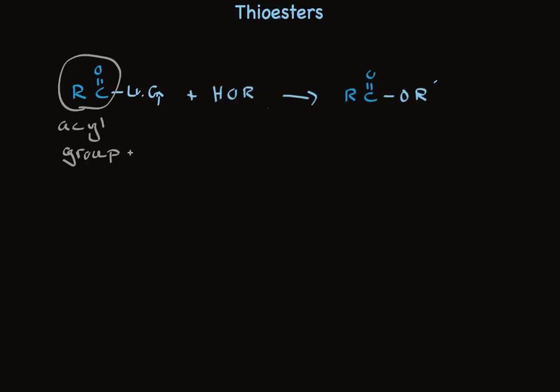Thioesters are the perfect solution. For example, the building block acetate can be converted into acetyl-thioester. This SR often is a coenzyme A group, so this is called acetyl-coenzyme A. Because it undergoes nucleophilic acyl substitution readily, this compound is used to make acetyl derivatives, such as the important neurotransmitter acetylcholine.